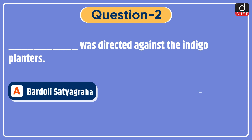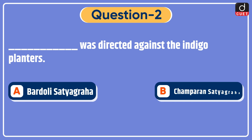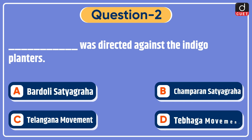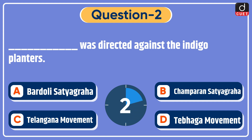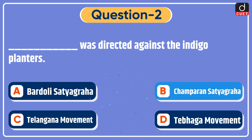Next question: which movement was directed against the Indigo Planters? The correct answer is option B, Champaran Satyagraha.